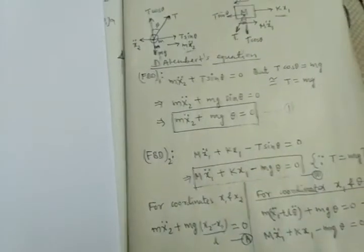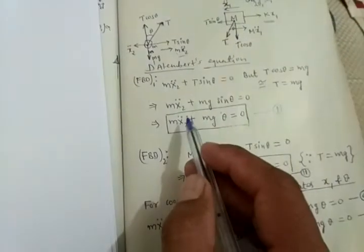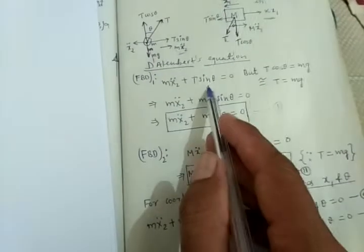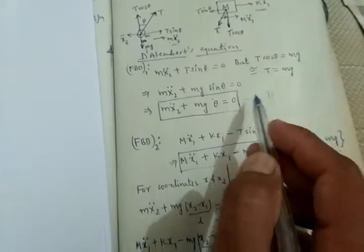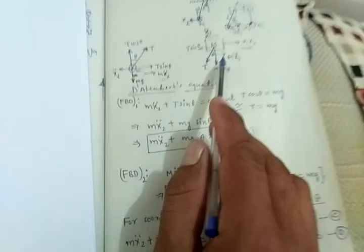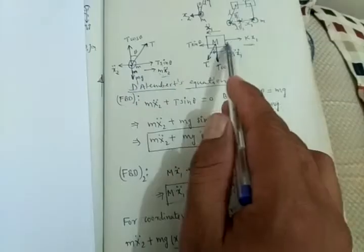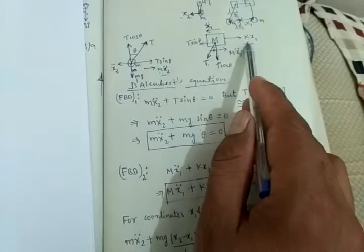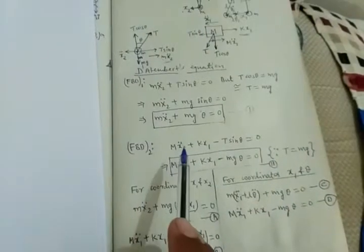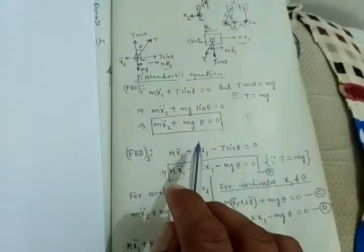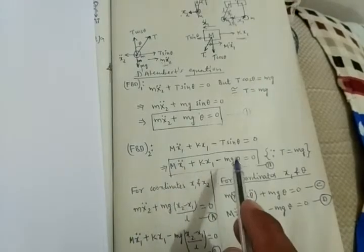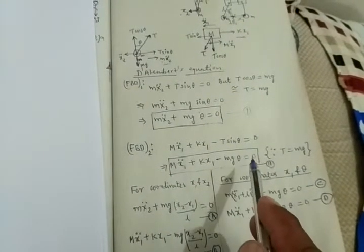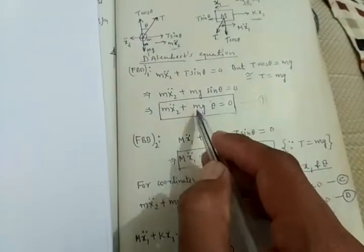Substituting T = m*g into the pendulum equation and using small angle approximation sin theta ≈ theta, we get: m*x2 double dot + m*g*theta = 0. This is the first equation of motion. For the cart, the D'Alembert's equation in the horizontal direction gives: M*x1 double dot + k*x1 − m*g*theta = 0. These are our two equations of motion.